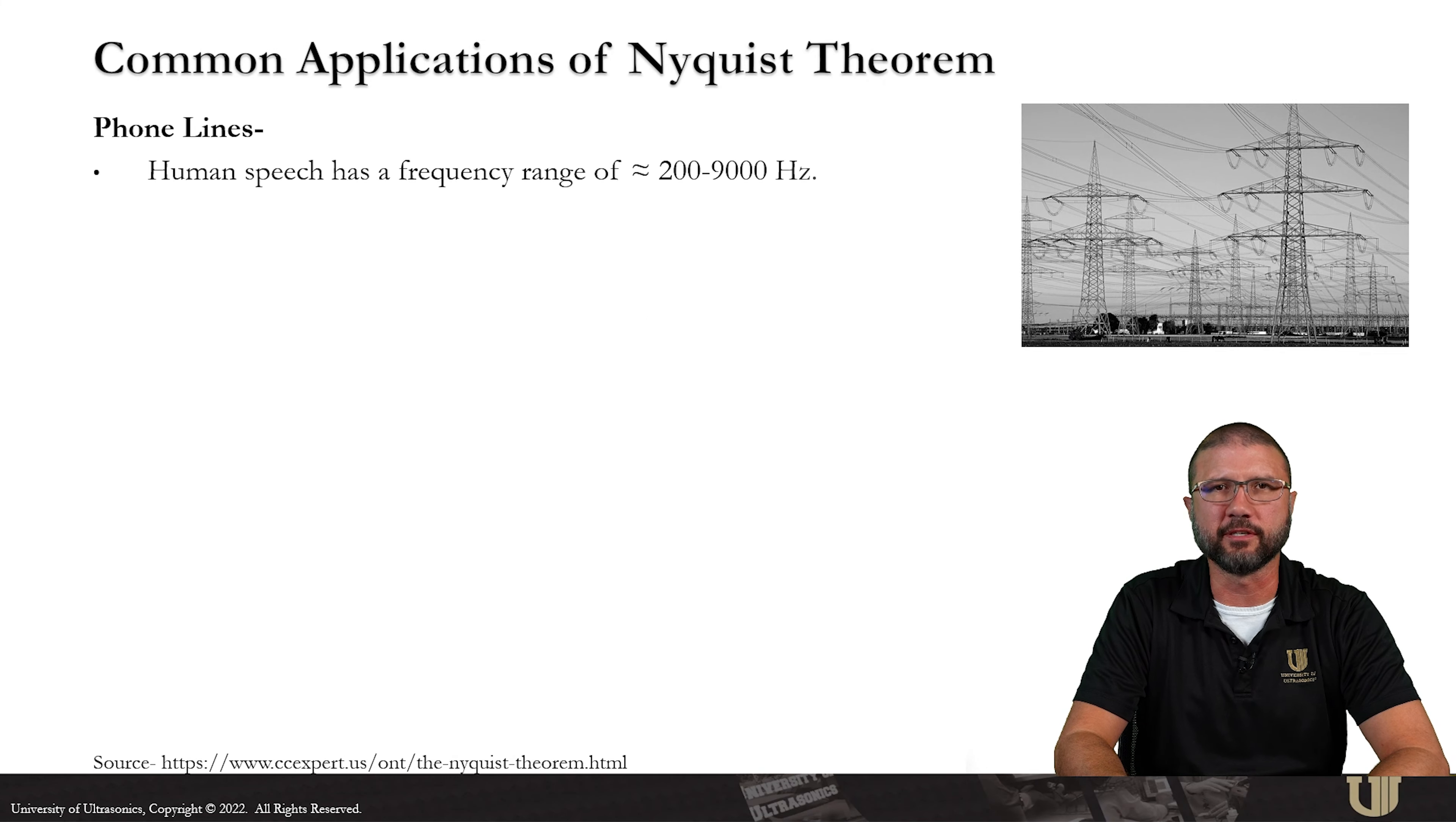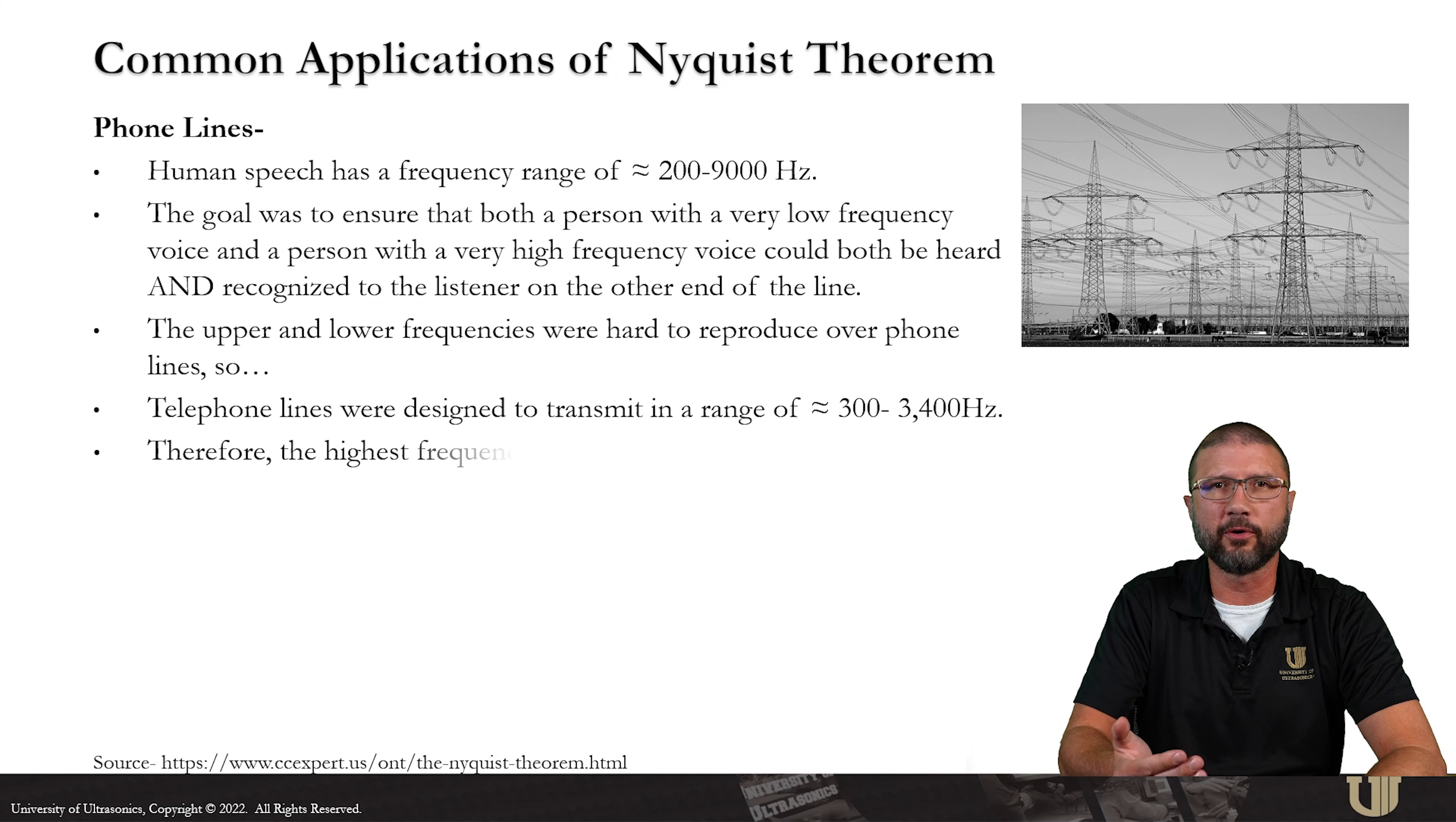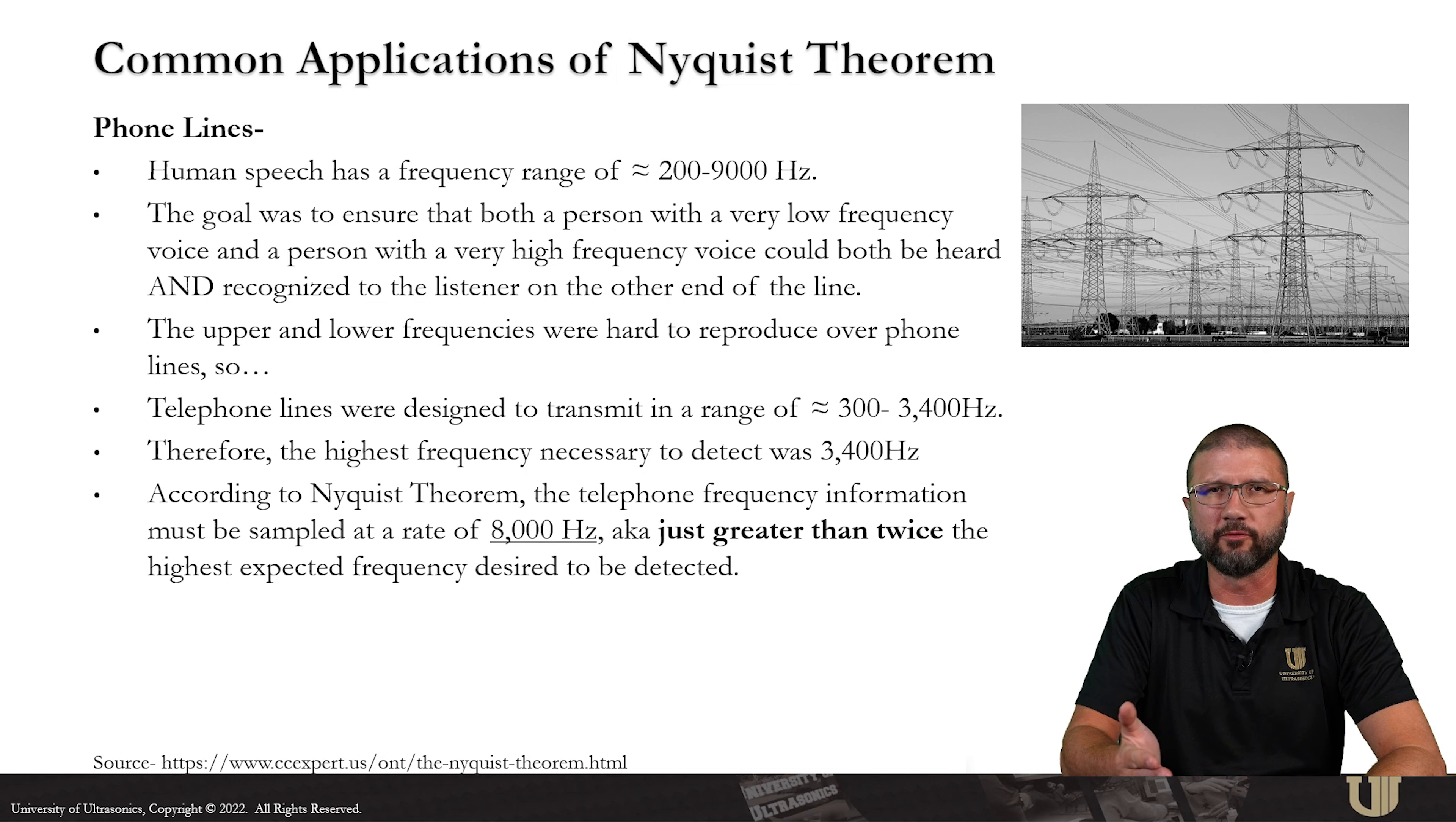So let's talk about some common applications of Nyquist theorem. He did his work with telephone systems. Human speech has a frequency range of about 200 to 9,000 Hertz. The goal in telephone lines is to make sure that both a person with a high frequency voice and a low frequency voice could be both heard and recognized to a listener on the other end of the phone line. The upper and lower frequencies of that human voice range proved to be difficult to transmit over electrical lines. So 300 to 3,400 Hertz was chosen as the frequency range that was going to be transmitted. The highest frequency necessary to detect was 3,400 Hertz. According to Nyquist theorem, the telephone frequency information had to be sampled at 8,000 Hertz, which was a rate just greater than twice the highest frequency of interest that we wanted to reproduce.